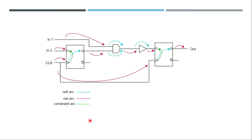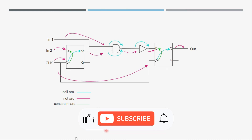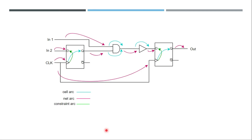Looking at our previous figure again, the arcs are now shown in different colors: those in purple are net delay arcs, those in sky blue are cell delay arcs, and those in green are constraint arcs. I hope you now have a better understanding of what timing arcs are, the different types, and how important they are in delay calculation during static timing analysis. Thanks a lot for watching — see you in another video!